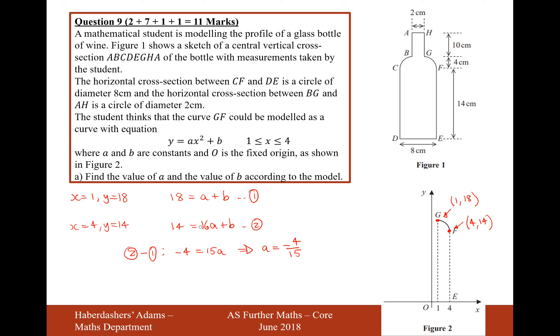So now that A is minus 4 over 15, B is going to equal 18 plus 4 over 15, 18 plus 4 over 15 equals 274 over 15. Lovely, some nice easy values for A and B there.